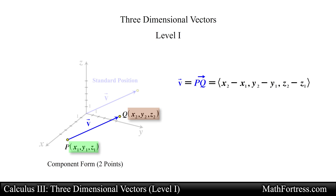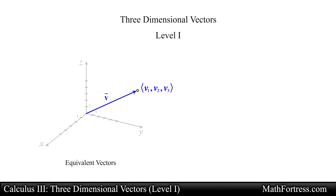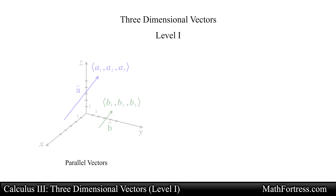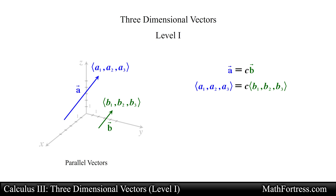Many of the properties for two-dimensional vectors also apply to three-dimensional vectors. For example, two vectors are still equal if and only if the components of both vectors are equal — in other words, vector u equals vector v if and only if the x, y, and z components are equal. Two nonzero vectors are still parallel if there is some scalar c such that vector a equals c times vector b, meaning the x, y, and z components of vector a are a constant multiple of the x, y, and z components of vector b respectively.